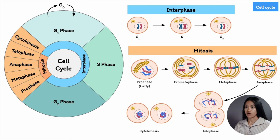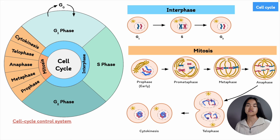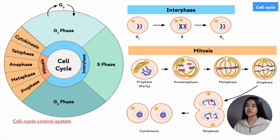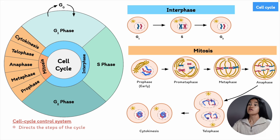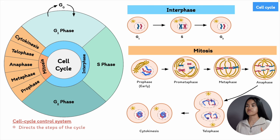To make sure eukaryotic cells replicate all their DNA and organelles and divide properly, eukaryotic cells have regulatory proteins known as the cell cycle control system. Cells move through the cell cycle in a regulated way to ensure that cell cycle events — DNA replication, mitosis, and other processes — occur in a predetermined order, and that each activity is finished before the next one starts. The cell cycle control system directs the steps of the cycle and prevents cells from dividing in unfavorable circumstances. Without this feedback, a delay in any of the steps could be detrimental.